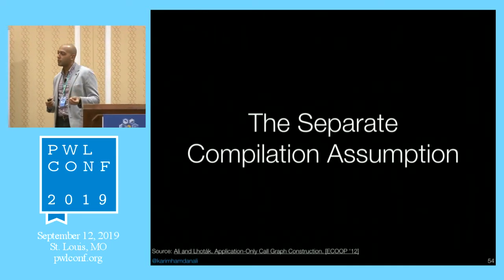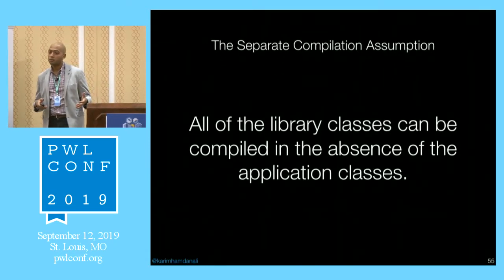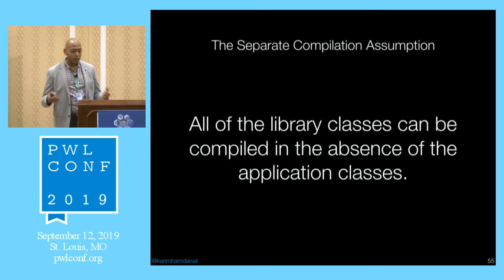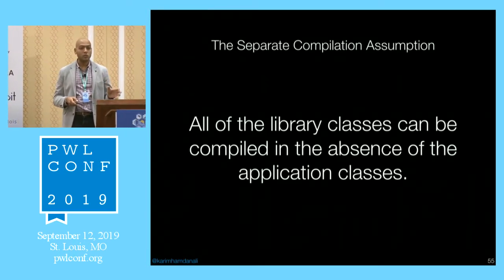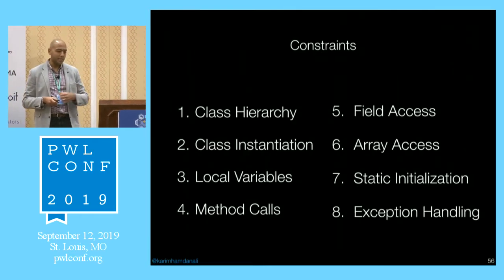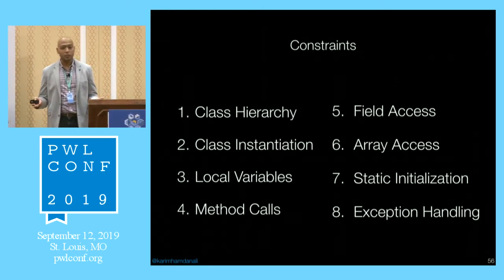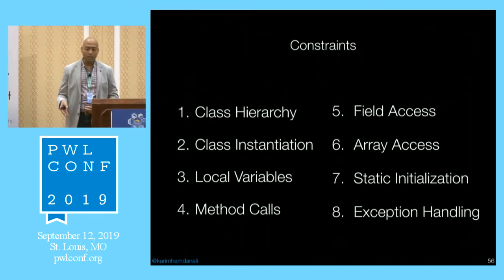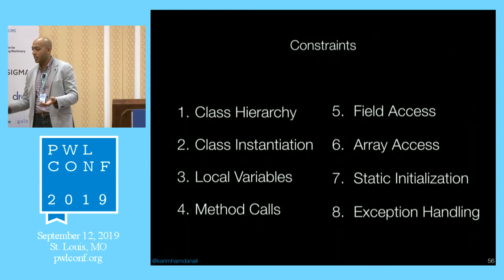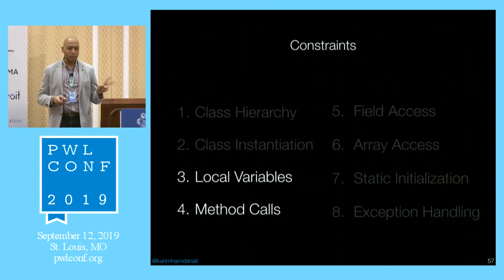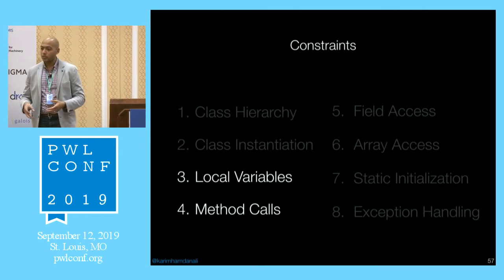To address that problem, we define what we call the Separate Compilation Assumption. It states that all library classes in a language like Java can be compiled in the absence of application classes. This is a simple but powerful assumption — it lets us define constraints about how the library interacts with the application: what classes can exist in the library, what application classes can inherit from library classes, what objects the library can instantiate, access to fields, arrays, local variables, method callbacks, and so on.